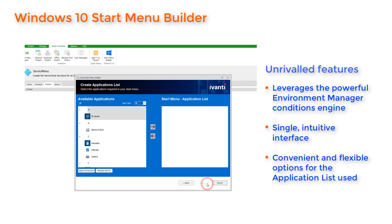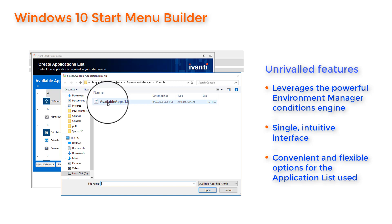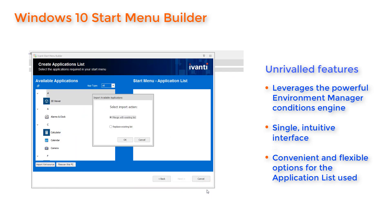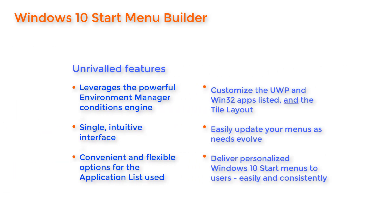It offers real flexibility for your starting point too. By default, it uses an XML application list created automatically from your current machine. Alternatively, it can use an imported XML list from any image you supply. The Environment Manager Windows 10 Start Menu Builder provides a matchless solution to customization — use it to deliver all the benefits of a personalized Windows 10 Start Menu to your different user groups easily and consistently.